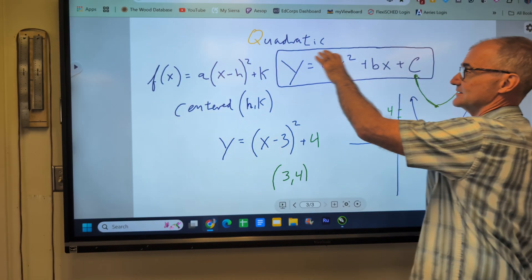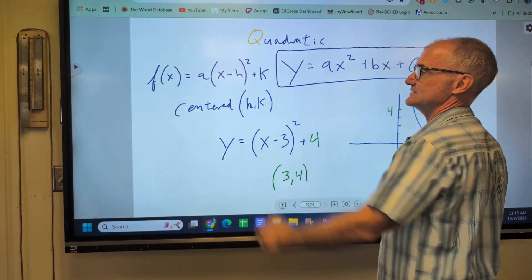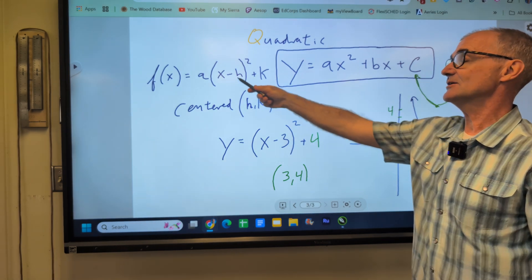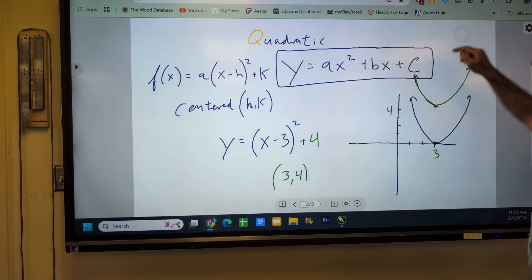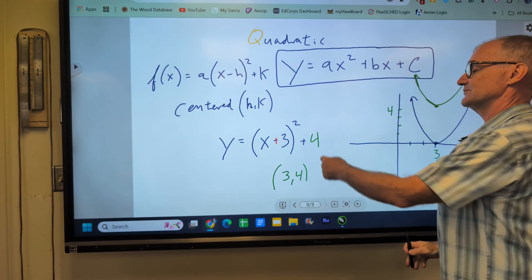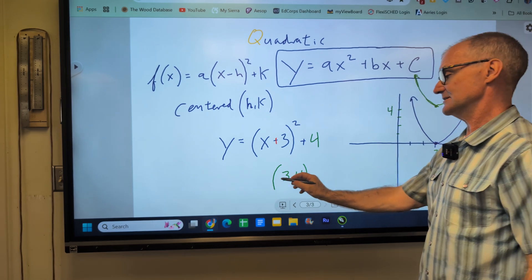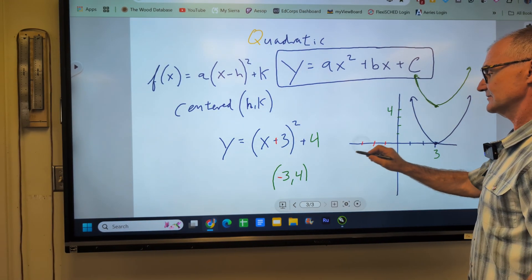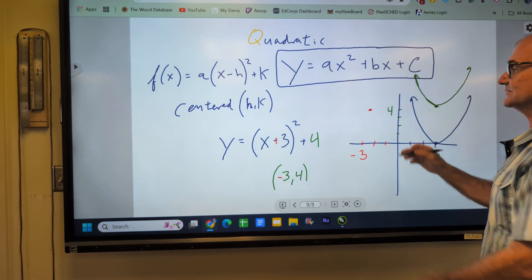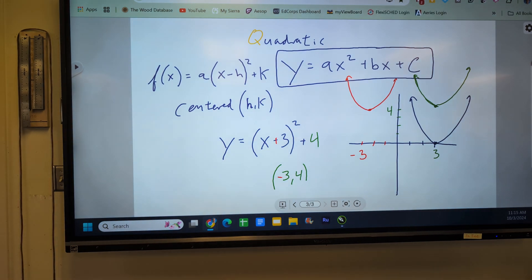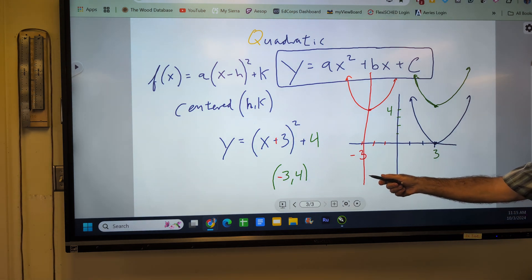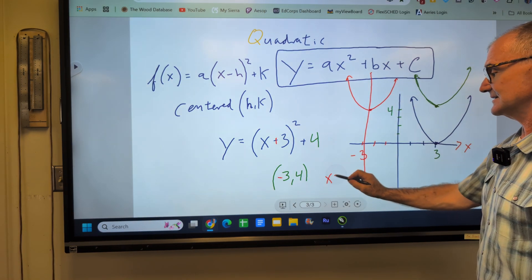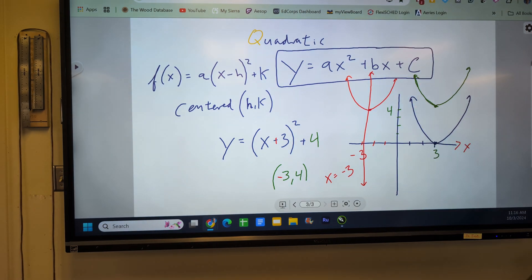So again, this is the general equation of a quadratic. This is the general equation of graphing a parabola centered at the point h, k, noting that's a negative value. So if this is x plus 3, if it were now x plus 3 plus 4, this is going to reverse it. So this is going to be negative 3. So it is now centered at negative 3, 4. It is still y equals x squared, so it still opens up this way.